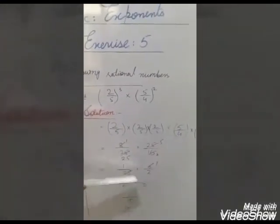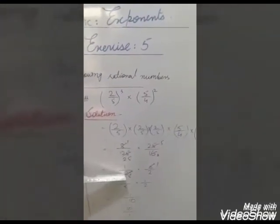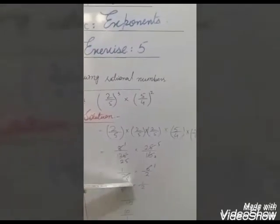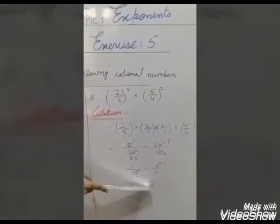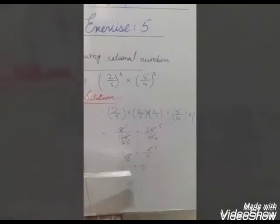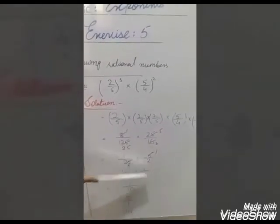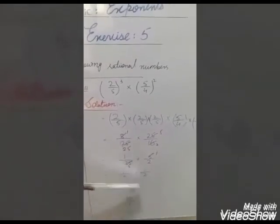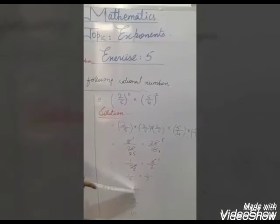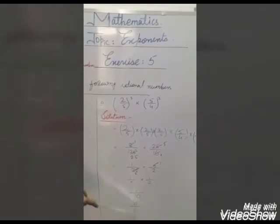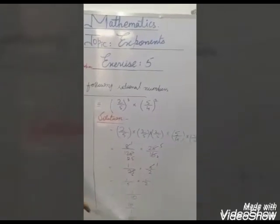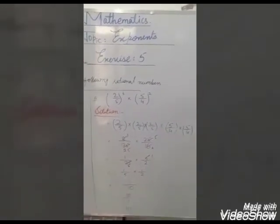Again check: 1 and 2 cannot cancel, but 5 and 25 can cancel — 5 ones are 5, 5 fives are 25. Then 1 by 5 multiplied by 1 by 2: numerator times numerator gives 1, denominator times denominator gives 10. So 1 by 10, and the reciprocal of 1 by 10 is 10.